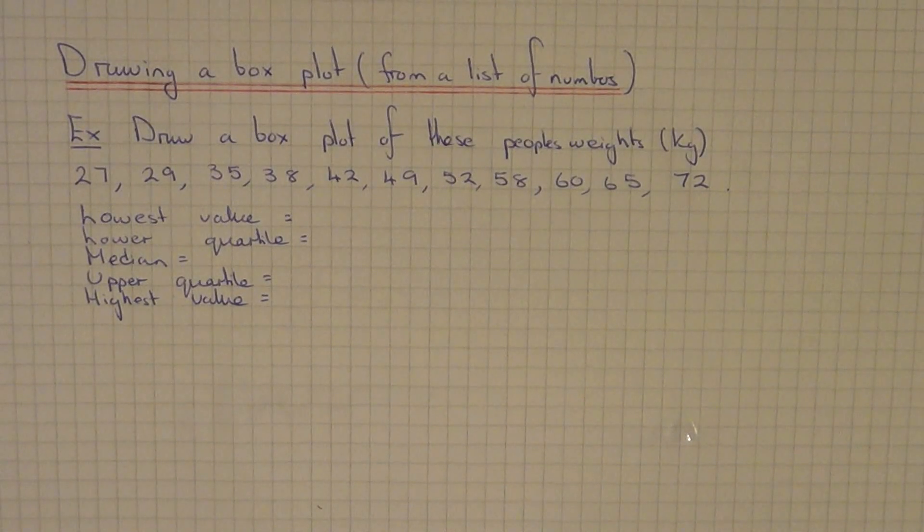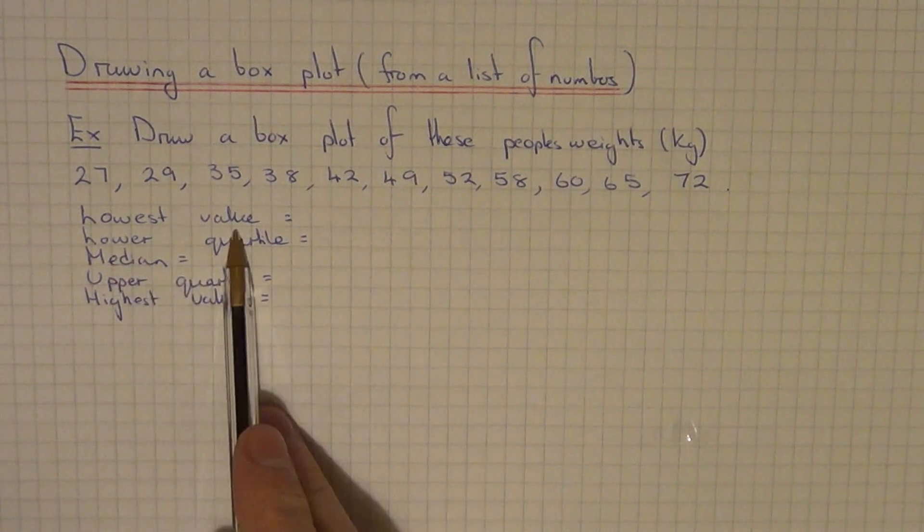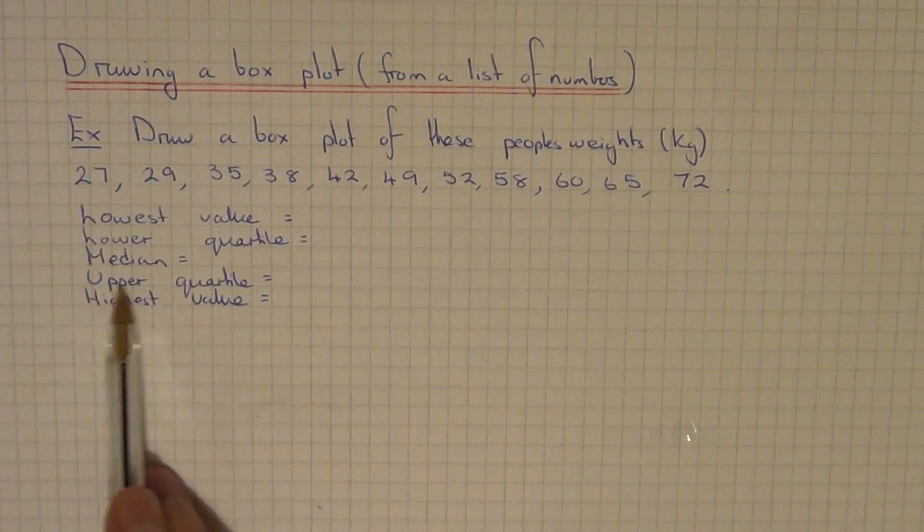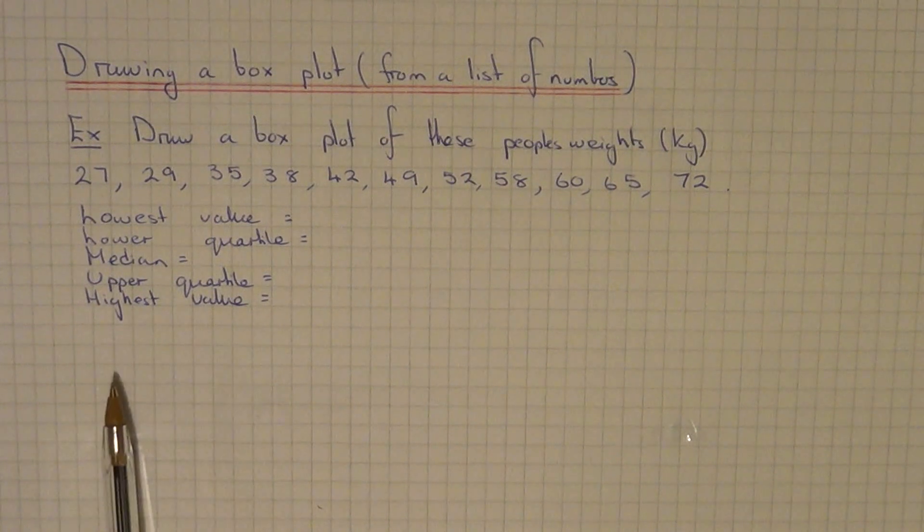Today I want to show you how to draw a box plot from a list of data. In order to do this, we need to work out five key values: the lowest value, the lower quartile, the median, the upper quartile, and the highest value.